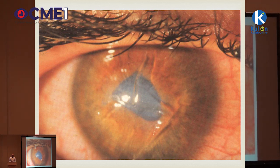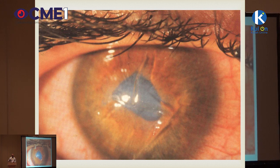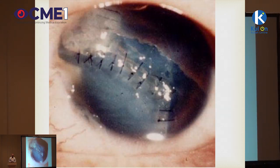For a patient with a full-thickness corneal laceration, the management principles are: keep them fasted, ensure tetanus status is up to date, give prophylactic systemic antibiotics, avoid topical eye drops, have the patient wear a hard shield to prevent accidental prolapse of more tissue, and perform the repair in the operating theater. For an extensive corneal laceration with prolapse of a lot of intraocular tissue, primary repair involves an anterior vitrectomy, closing the cornea, repositing iris tissue, and managing vitreous hemorrhage as a secondary procedure.